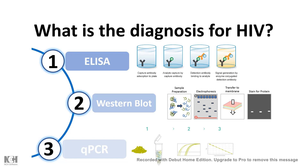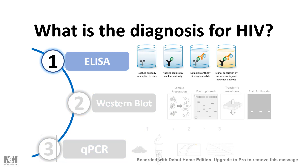A confirmatory test would be Western blotting against specific markers of AIDS. A qPCR-based analysis can determine how much HIV viral mRNA is present in the patient sample, telling us about the viral load and the stages of HIV propagation in the infected patient.